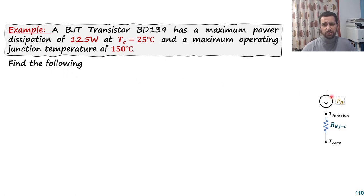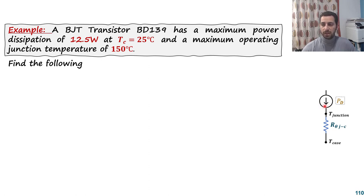Before finding the answer, let's draw the electrical model. The power dissipation is represented by a current source with the same value as the power dissipation. So if you have a power dissipation of, for example, 10 watts, that current source will have 10 amperes. We then go through the first thermal resistance, which is from the junction to the case. Since we don't have the ambient and other elements here, we are only considering this first thermal resistance.